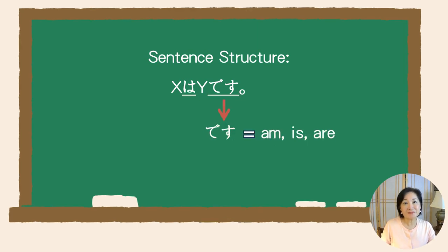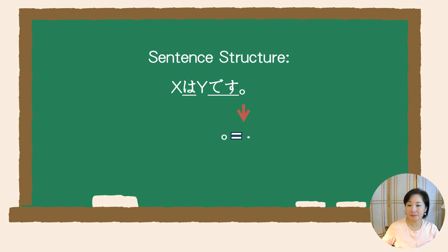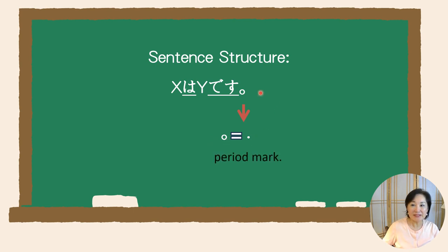The last part of the sentence is desu, and it is an auxiliary verb. In English, the be verb changes its form depending on the subject, but in Japanese it's always the same. At the end of the sentence, you place the period mark. The Japanese period mark is a small circle, and you put it right here.